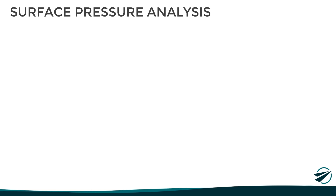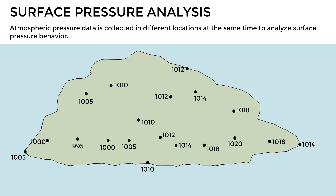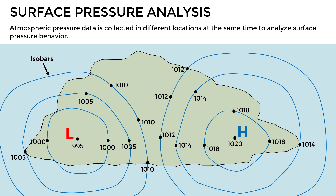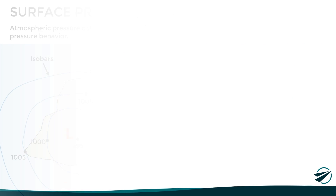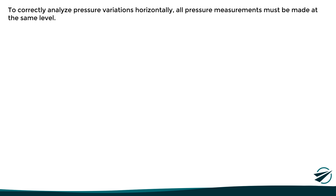In the previous video, we said that in order to perform a surface pressure analysis, atmospheric pressure data is collected and compared between different weather stations. However, a key aspect was that all stations had to be at the same level, because to correctly analyze pressure variations horizontally, all pressure measurements must be made at the same level or altitude.